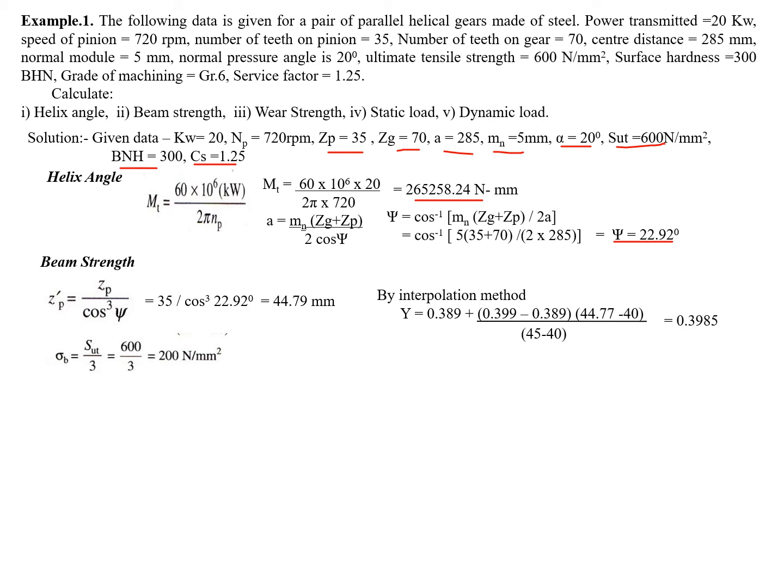Beam strength: to find out the beam strength, sigma b is needed. Sigma b equals Sut divided by 3. Put the value: beam width b equals mn times sigma b divided by y, and we get the value. So here we get the second answer, that is beam strength.